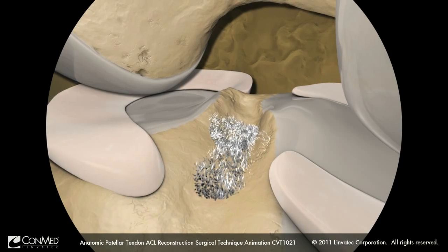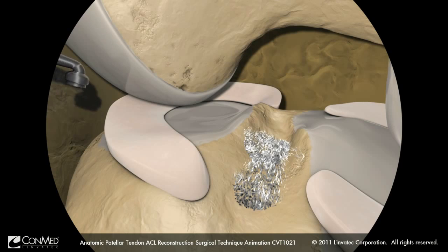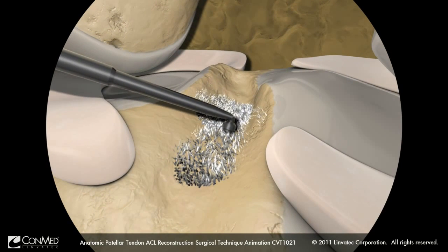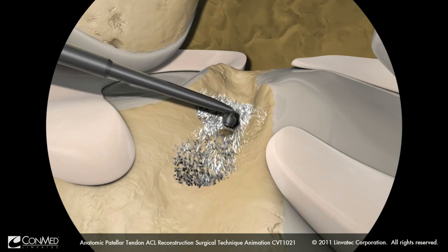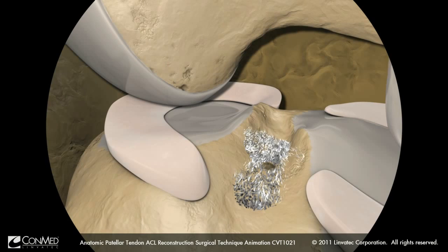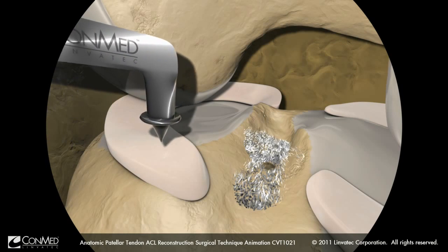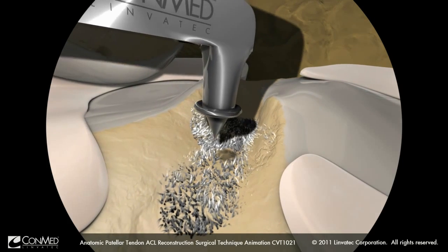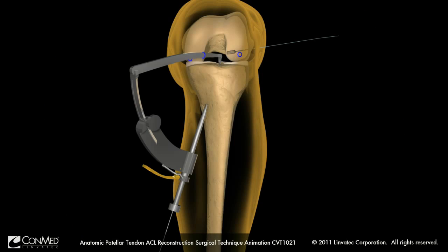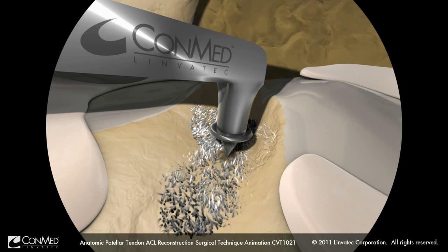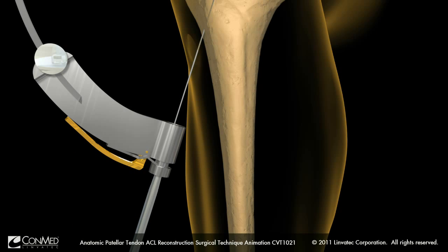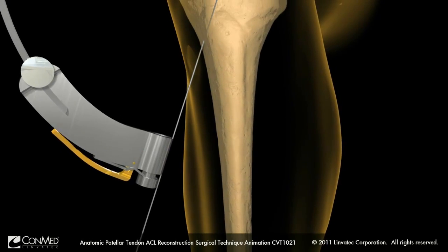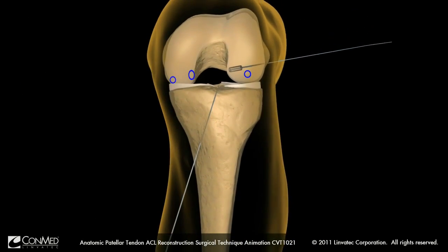Switch the arthroscope to the anterolateral portal. Insert the light wave ablator into the anteromedial portal to mark the center of the tibial ACL footprint. Set the angle of the pin ACL guide to the desired settings. Insert the tip into the anteromedial portal, placing the tip of the guide into the center of the tibial ACL footprint. Advance the external guide sleeve flush to the anterior tibial cortex. Using the ConMed Linvitec M-Power 2 handpiece and pin driver attachment, advance the guide pin until it meets the point of the guide arm. Then depress the pin ACL drill guide lever to remove the sleeve, and remove the pin ACL guide from the guide pin and joint.